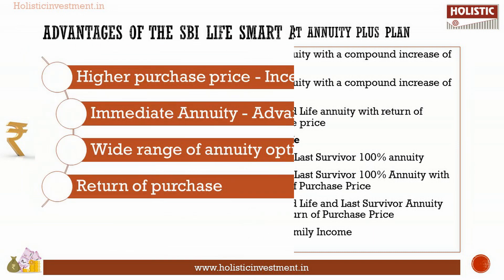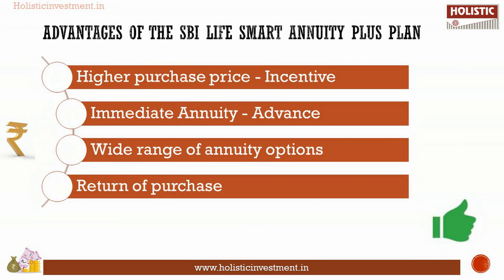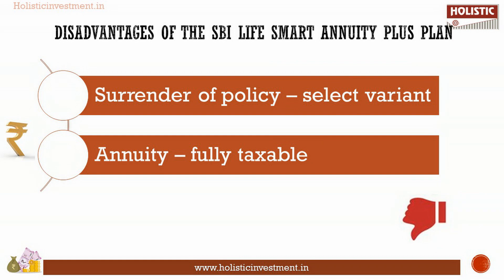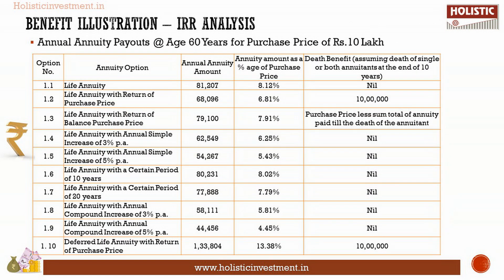Next, we shall analyze the advantages and disadvantages of SBI Life Smart Annuity Plus. Advantages include an incentive for higher purchase price, advancing your annuity payouts under the immediate annuity option, a wide range of annuity options to choose from, and return of purchase price under select variants. Disadvantages include that surrender of policy is applicable only under selected variants — in other variants your fund gets locked — and annuity income is fully taxable.